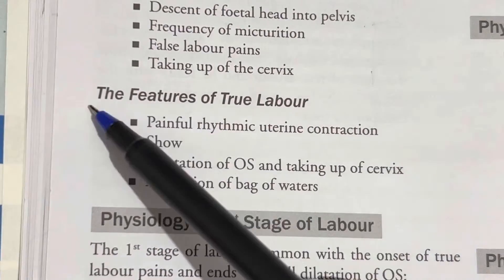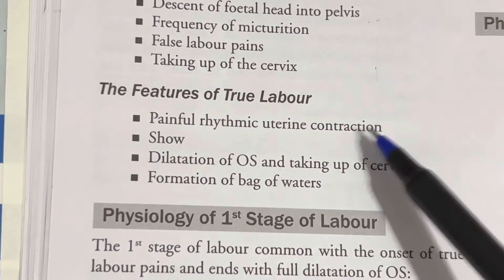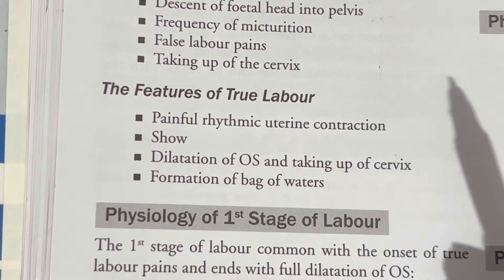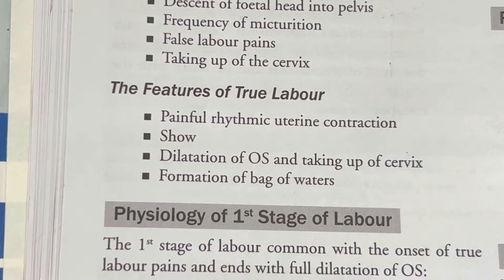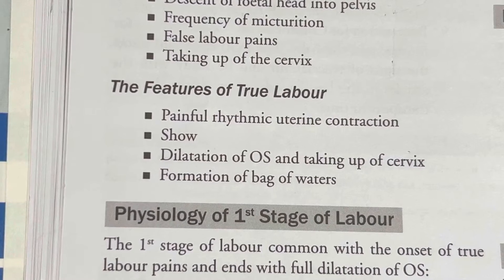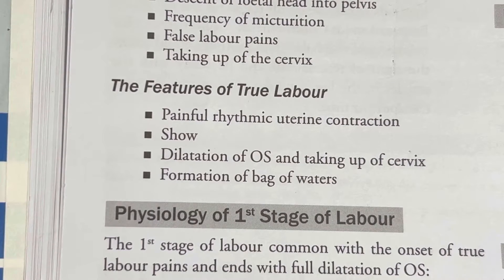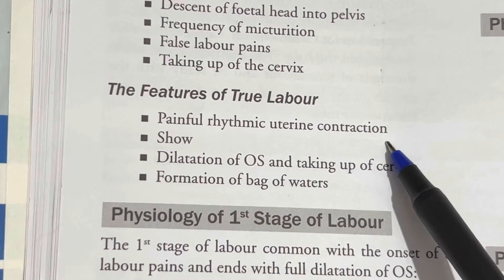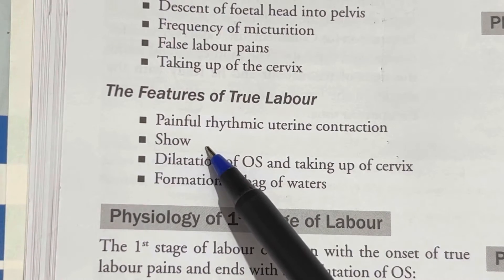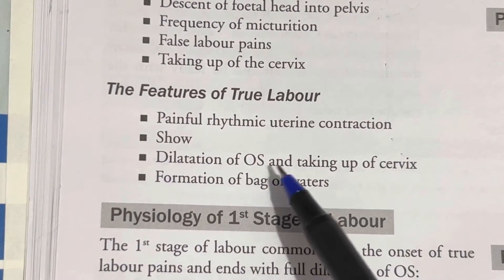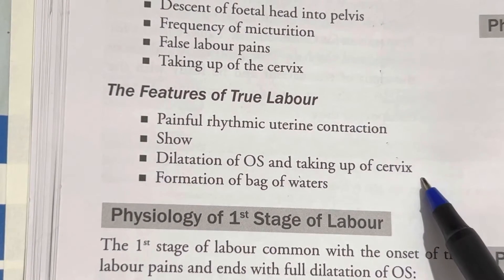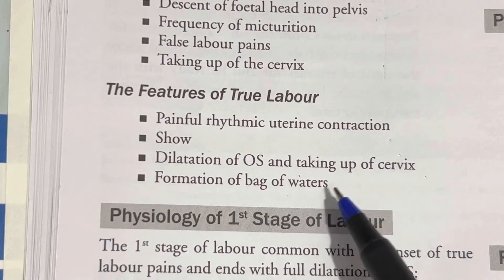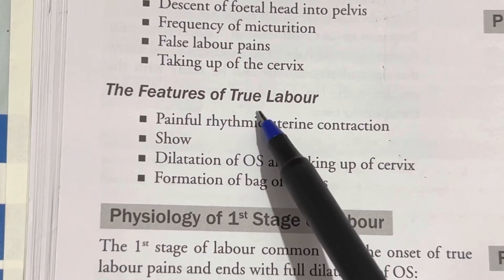Now, moving to the features of true labour. The first feature is painful rhythmic uterine contractions — the uterine contractions will be rhythmic and painful. Next is show, after that dilatation of the os, taking up of the cervix, and finally the formation of the bag of waters. These are all the features of true labour.